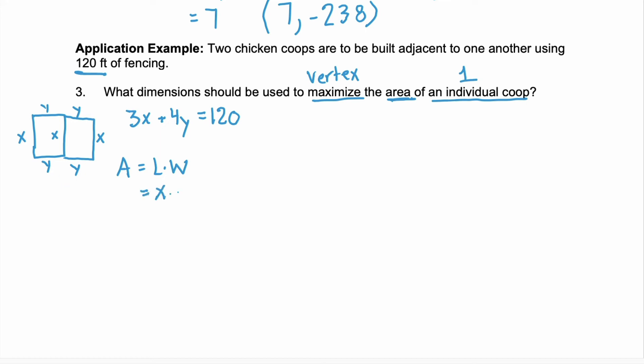And we're maximizing the area of an individual coop. So just one chicken coop. So the area of one chicken coop would be x times y. Now what we need to do is combine these two equations together. Our constraint equation and our area equation. To do that, we're going to rewrite the constraint equation in terms of y. So subtract 3x from both sides. And we have 4y equals negative 3x plus 120. Divide by 4. And we get y equals negative 3 fourths x plus 30.